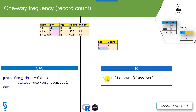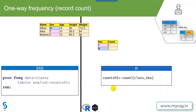In R, we have a function called count() in the tidyverse package, which we can use to count the number of records within a variable or group of variables. The first argument is always the input dataset name, and the second argument is the variable we want to count by. Here the input dataset is class and we are asking the count function to fetch frequencies based on the unique values of the sex variable.